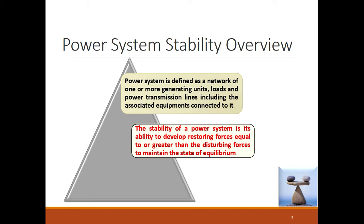It is the ability of the power system to regain its equilibrium position by having the restoring forces in the event of any disturbance. For example: the input to the power system is 120 megawatt, load is 100 megawatt, loss is 20 megawatt. So loss plus output equals 100 plus 20, that is 120, and the input to the network is 120 megawatt. Therefore, it is a state of equilibrium — input equals output plus losses.